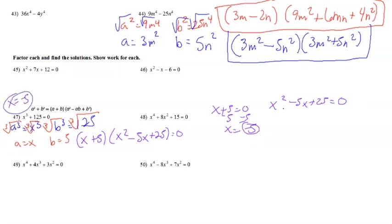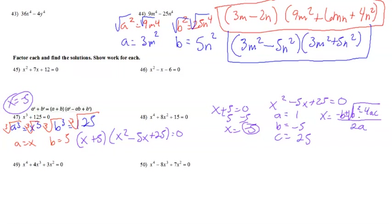We'll use the quadratic formula to find the other two answers from x² − 5x + 25 = 0. Identify a = 1, b = −5, and c = 25, and plug into the quadratic formula: x = [−b ± √(b² − 4ac)] / 2a.